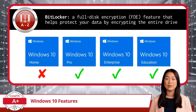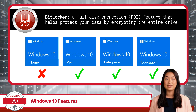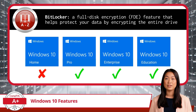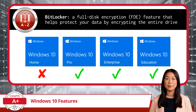Next, we have BitLocker, a Windows security feature designed to protect your data. BitLocker is a full disk encryption feature that helps protect your data by encrypting the entire drive. It ensures that even if your device is lost or stolen, the data remains inaccessible without the proper decryption key.